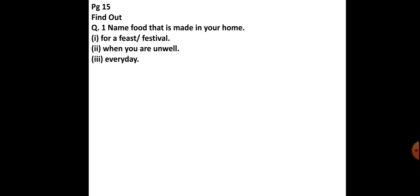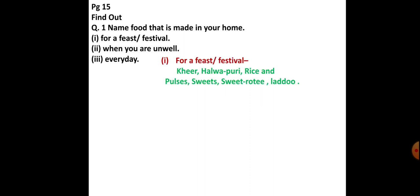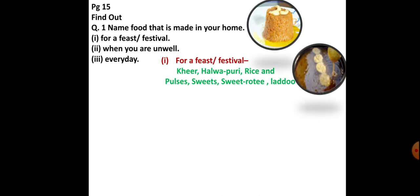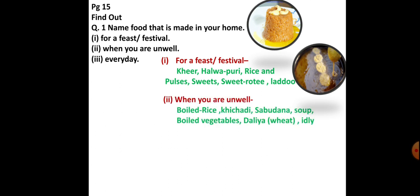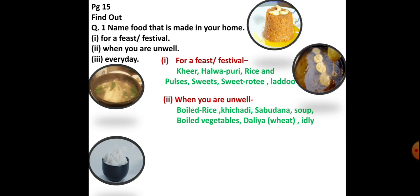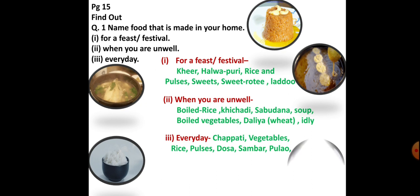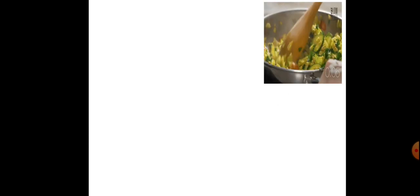Find out: name food made in your home for a feast or a festival, when you are unwell, and every day. For a feast or festival we have: kheer, halwa puri, rice, sweets, pulses, roti, laddus — very tempting dishes! When you are not well or sick, you have: boiled rice, khichdi, sabudana khichdi, soup, boiled vegetables, dalia — simple food which you can digest easily. And every day we have: chapati, vegetable, rice, pulses, dosa, sambar, and pulao.